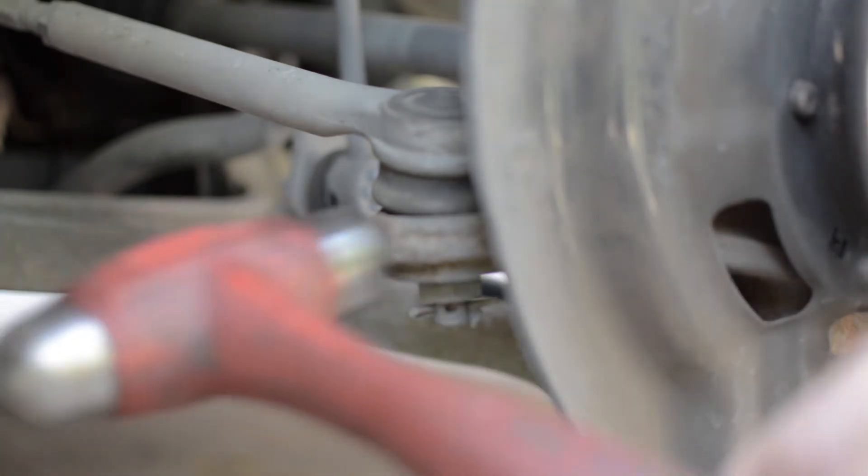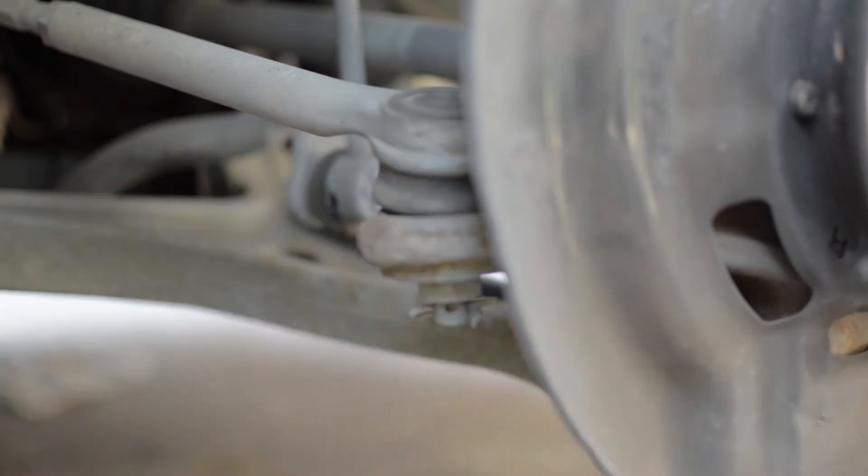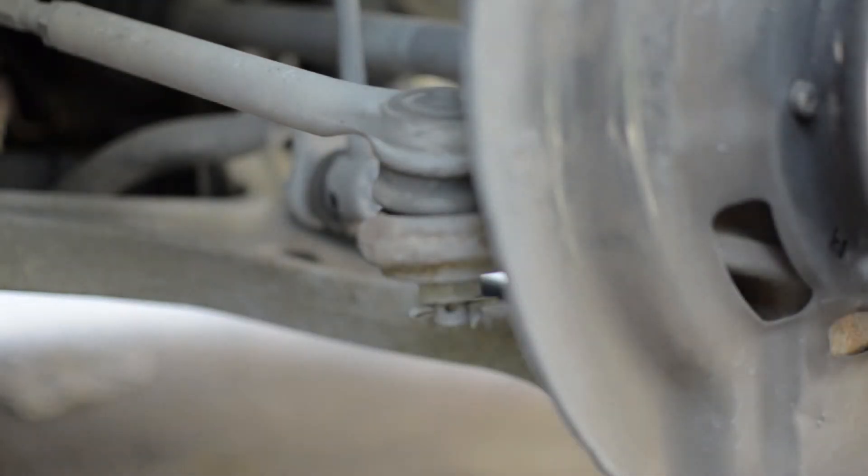Next, remove the outer tie rod from the knuckle. I have to remove the cotter pin, unscrew this nut, and then I'm going to hit this part of the knuckle with the hammer hard enough to create a violent vibration so that the outer tie rod comes off its socket.